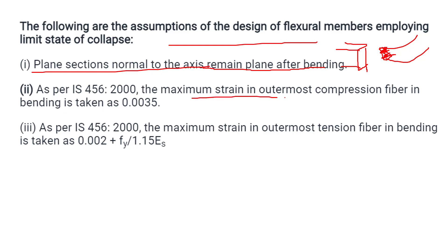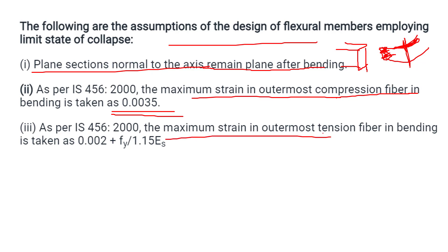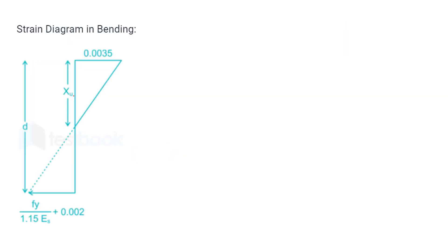Second assumption: the maximum strain in the outermost compression fiber in bending is taken as 0.0035. In the extreme fiber on the compression side, the strain will be 0.0035. Similarly, the maximum strain in the outermost tension fiber in bending will be taken as 0.002 plus the yield strength (fy) divided by 1.15 times Young's modulus (Es).